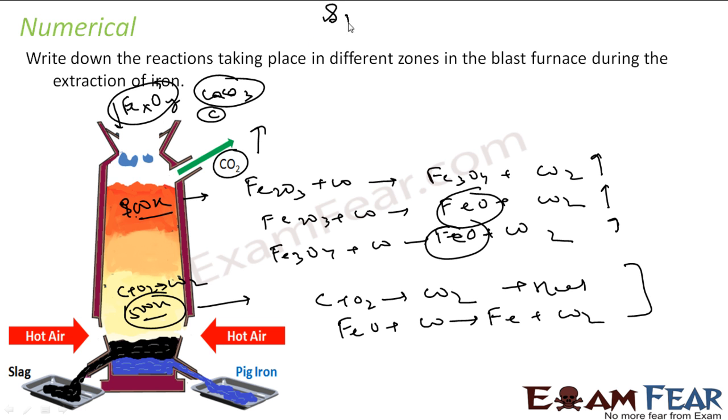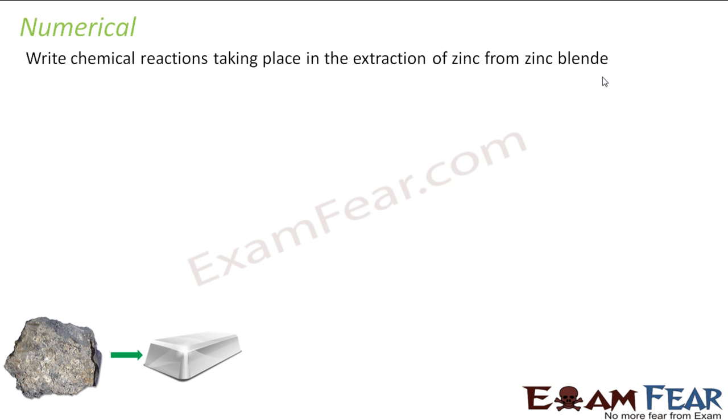If we talk about impurities, we have impurities here in the form of SiO2. This impurity will react with calcium oxide to form calcium silicate. And how you get calcium oxide - we are already supplying calcium carbonate, it breaks into calcium oxide and carbon dioxide. So these are the reactions that take place in the furnace.